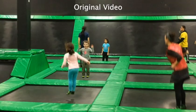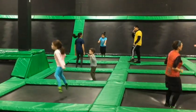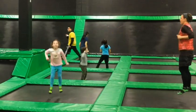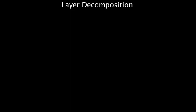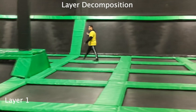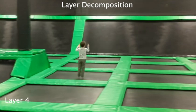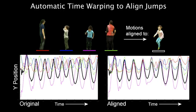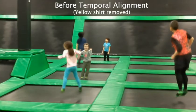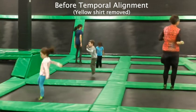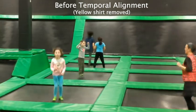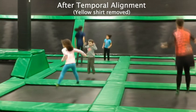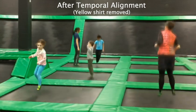Our method can be used to align the motions of multiple people in a scene. This trampoline video includes complex deformation effects caused by the people jumping. Our method produces a layer for each person that includes only the deformation effects caused by that person. Using the keypoint tracking data, each person's jump can be aligned in time. Here we show before temporal alignment and after temporal alignment. The person in the yellow shirt has been removed.